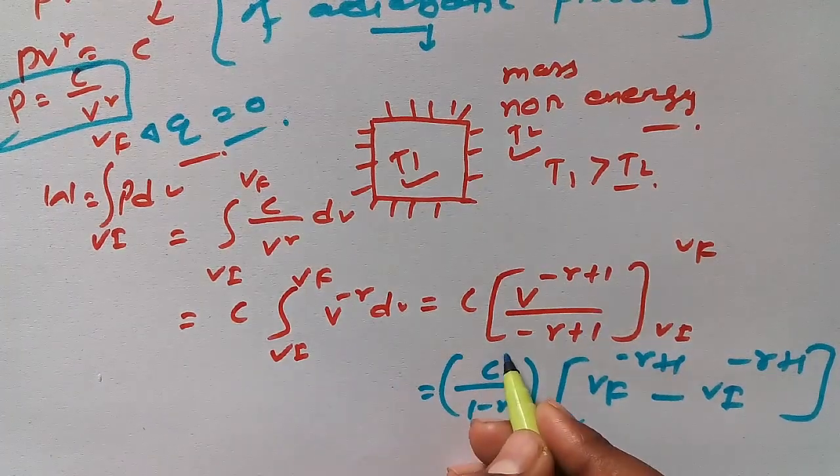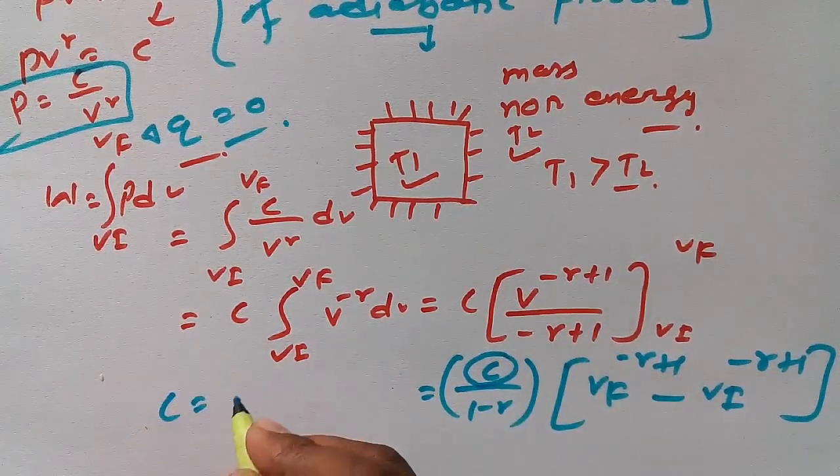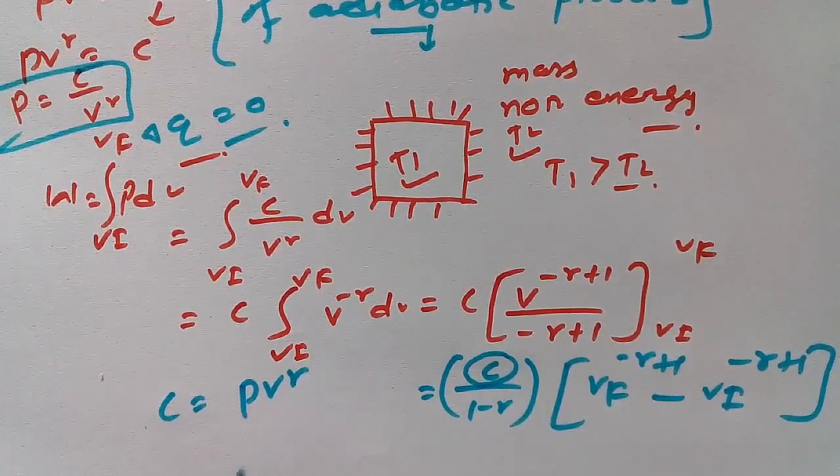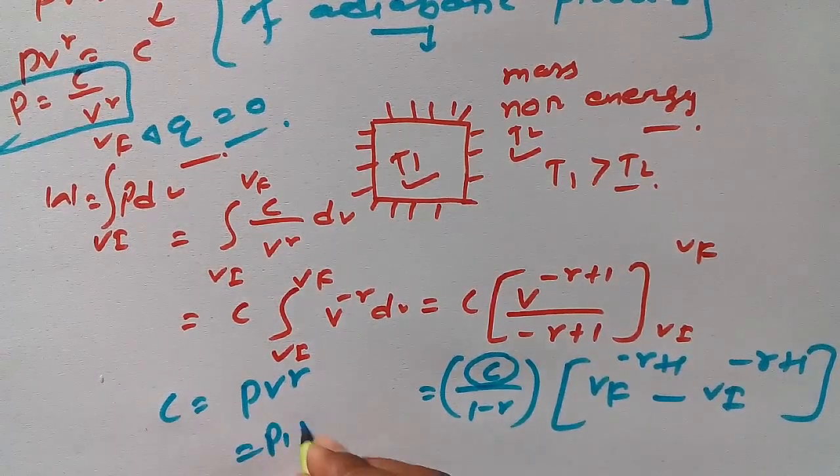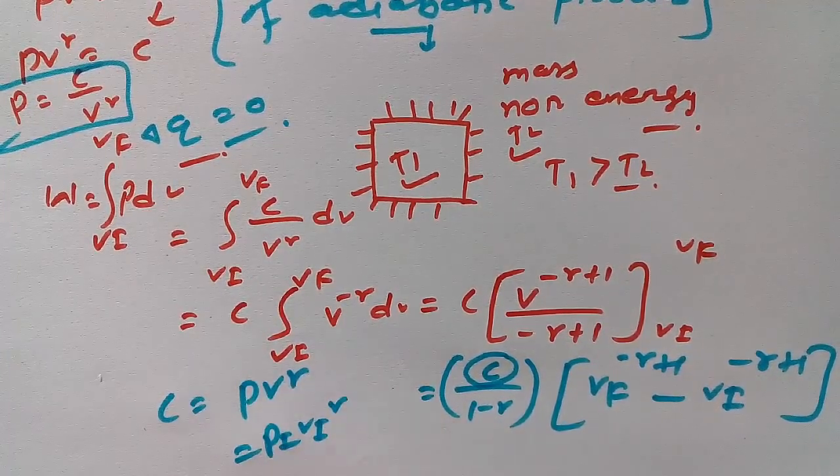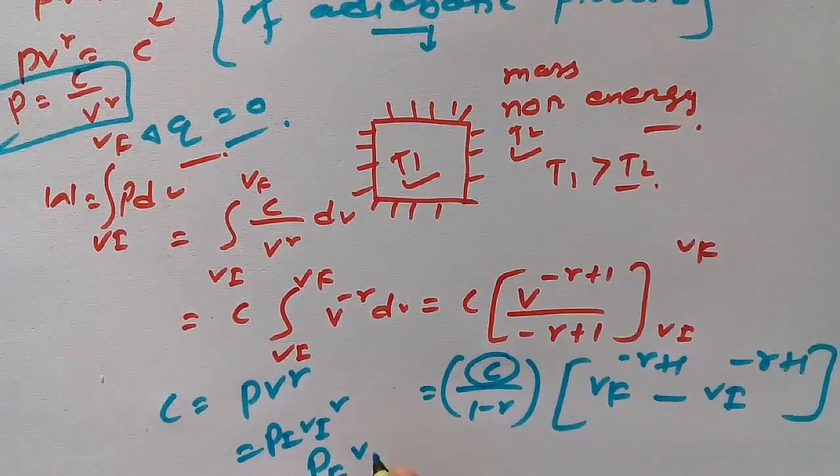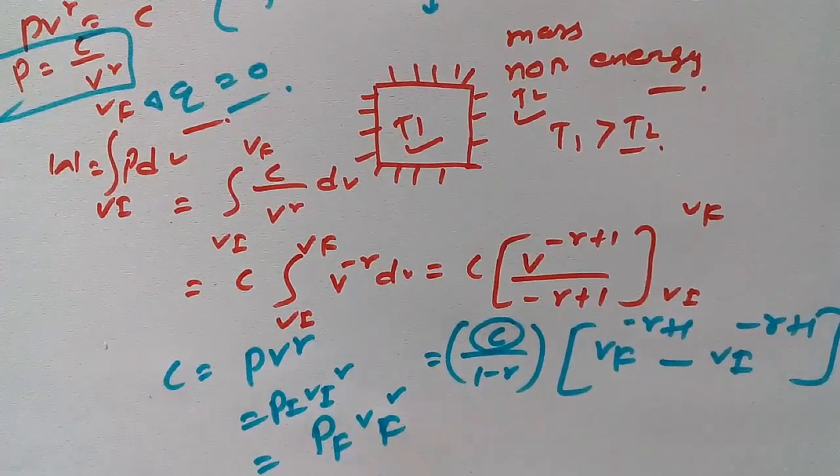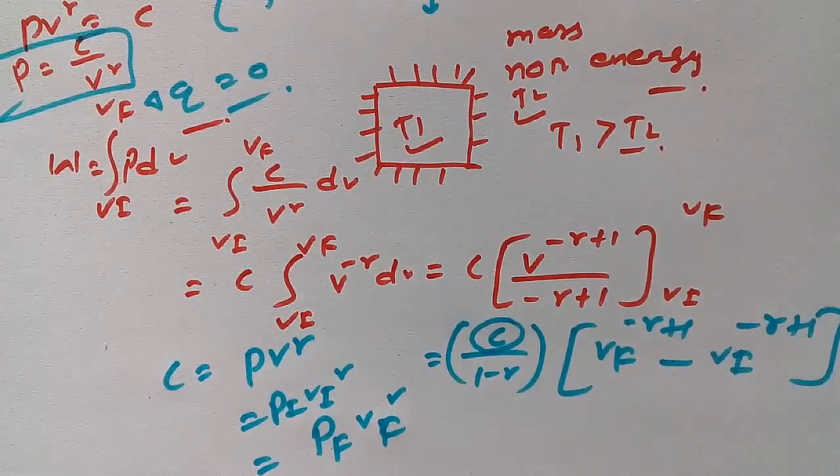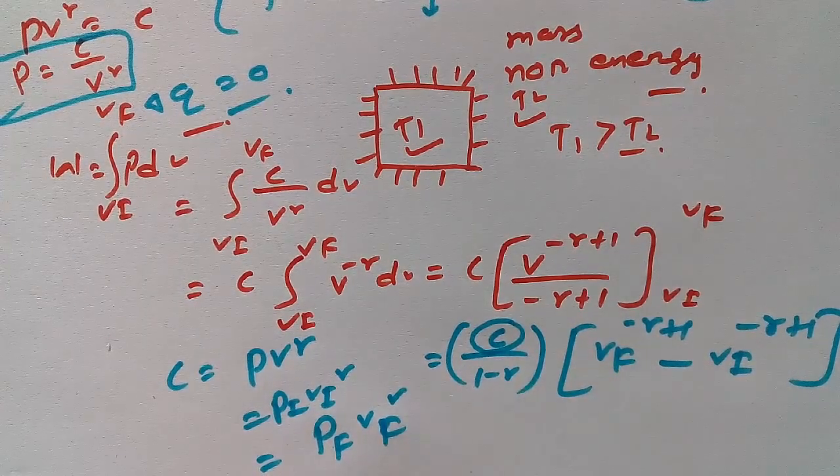What is the value of C? C equals PV^γ. So we can also write P_I V_I^γ equals P_F V_F^γ for this case only. Remember my dear friend. So if we put this value here...